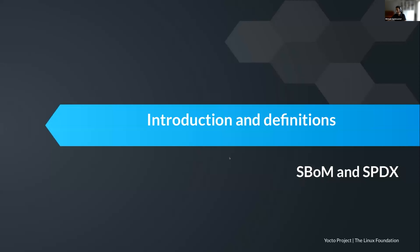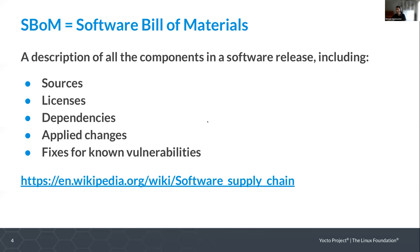Some introduction and definitions. The first term is SBOM, which means Software Bill of Materials. It's a description of all the components you can find in a software release. Anytime something containing software is released, you have details about the sources included, their licenses, their dependencies, the changes that were applied, and most importantly, the fixes for known vulnerabilities that were applied by the build system, or manually.